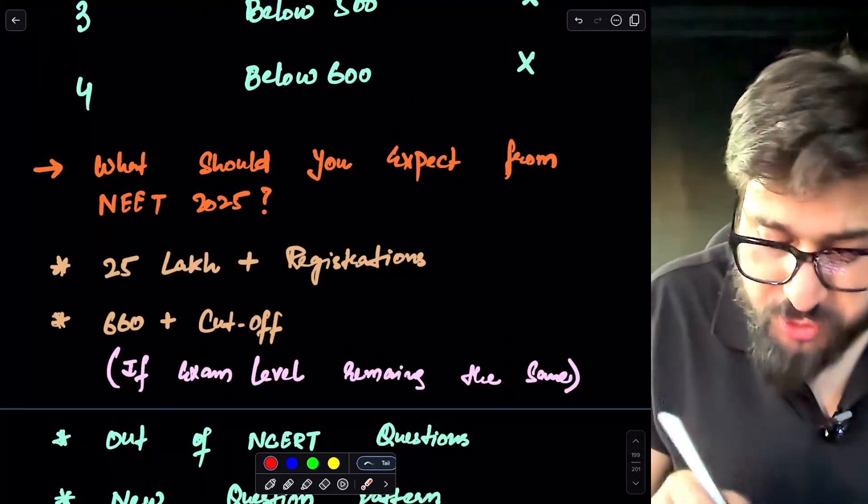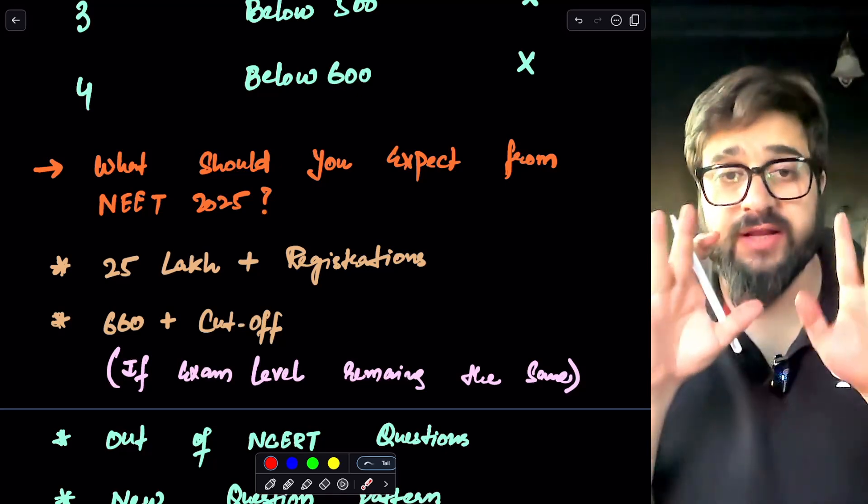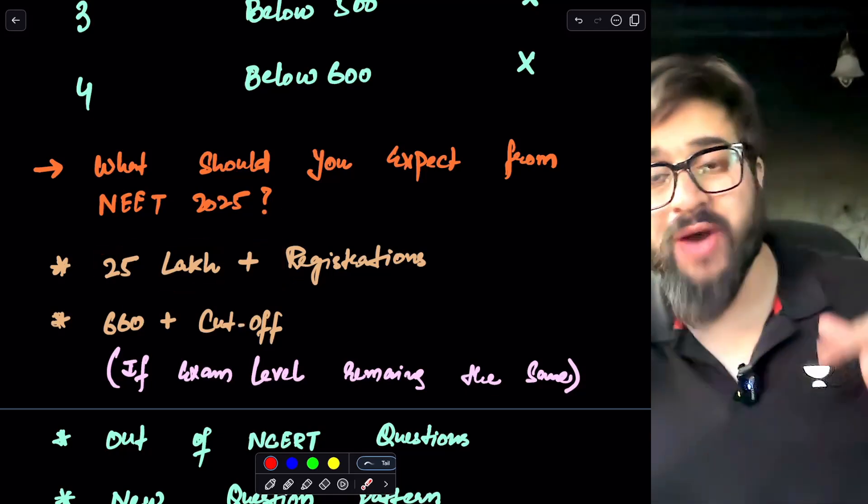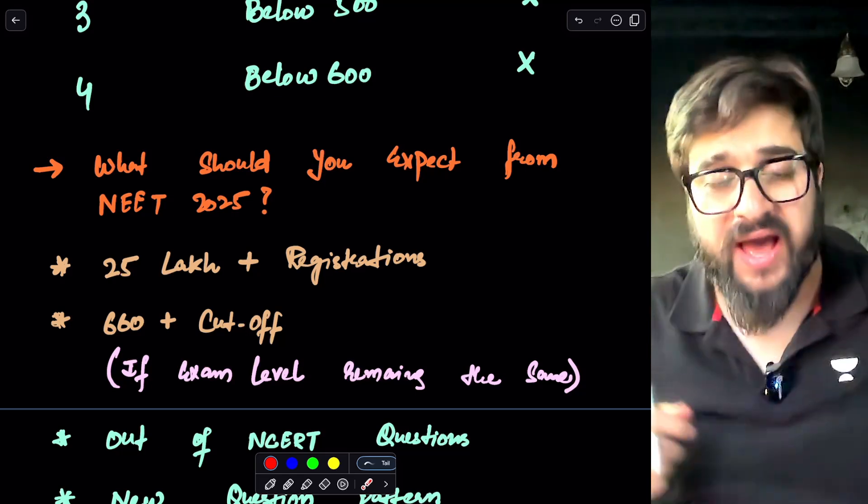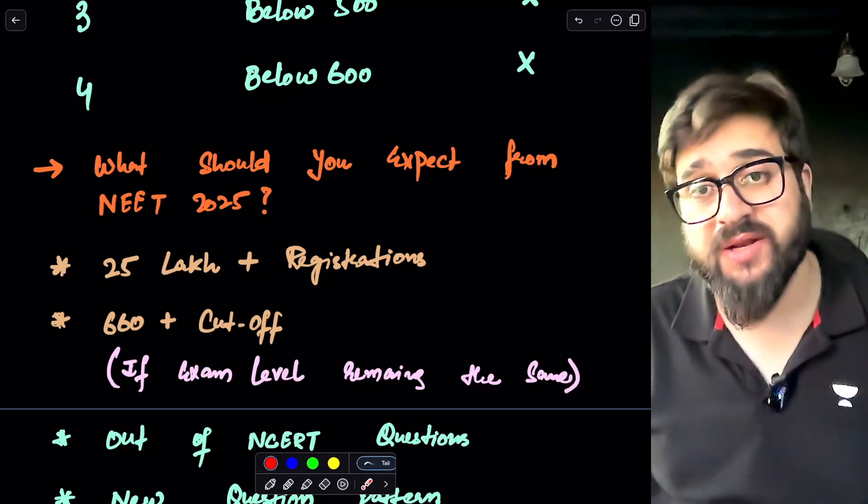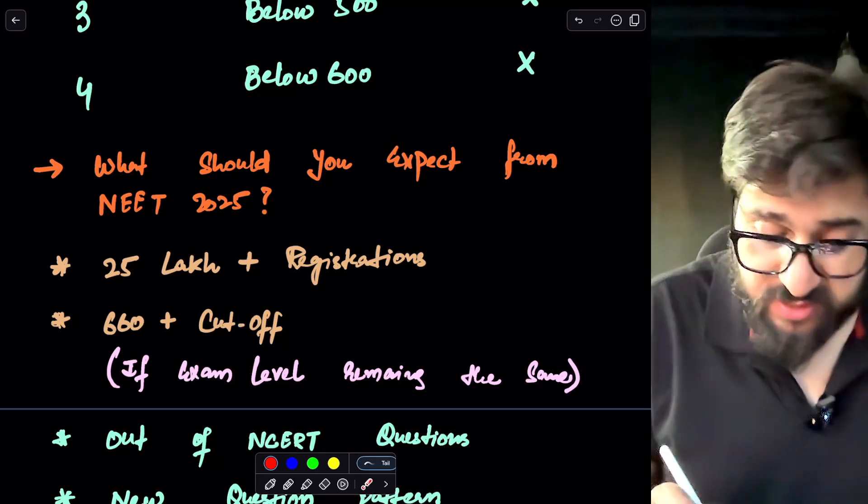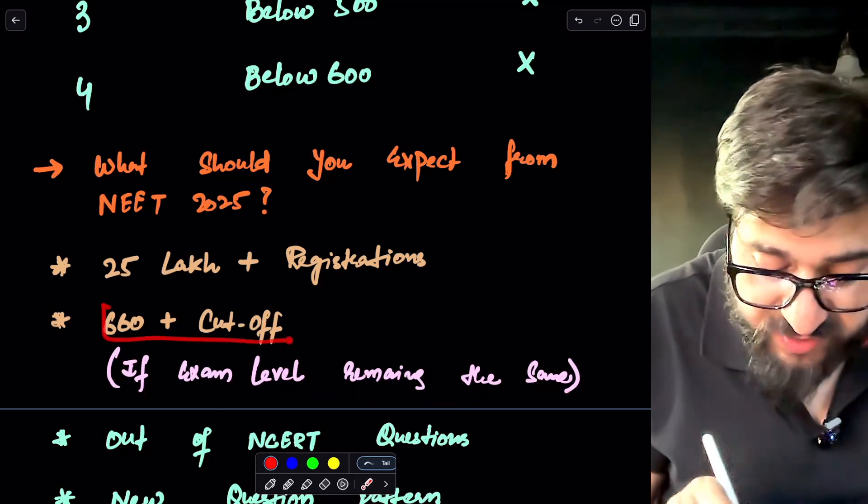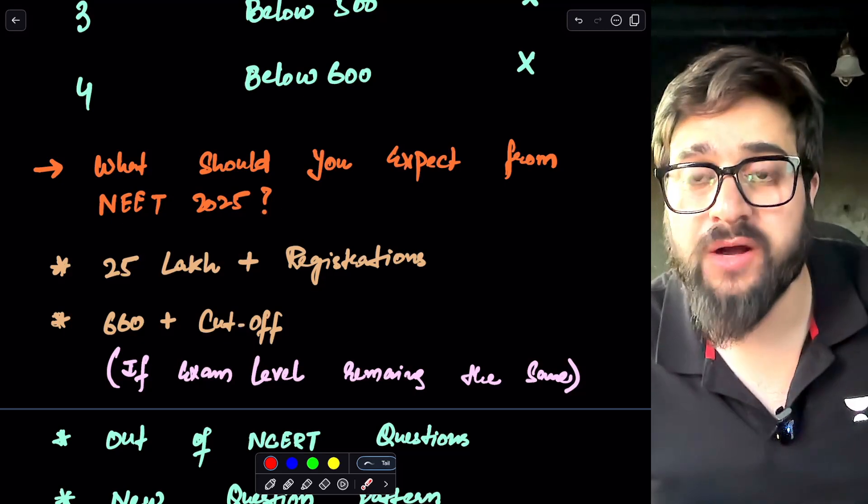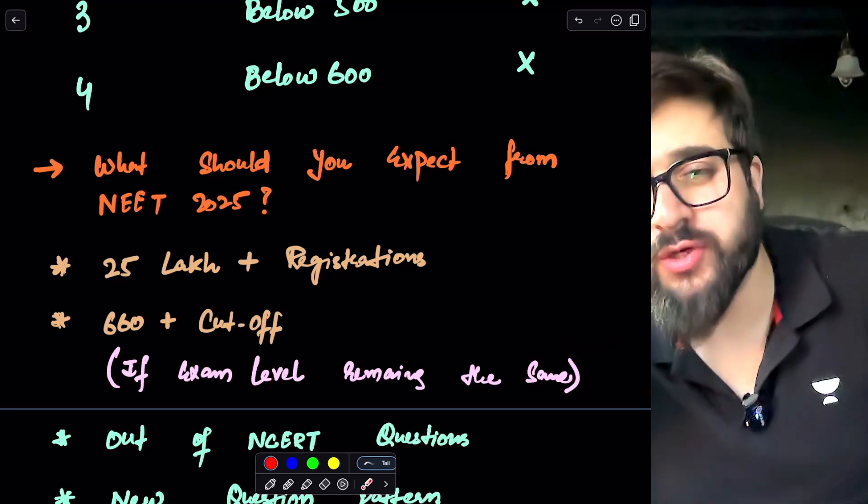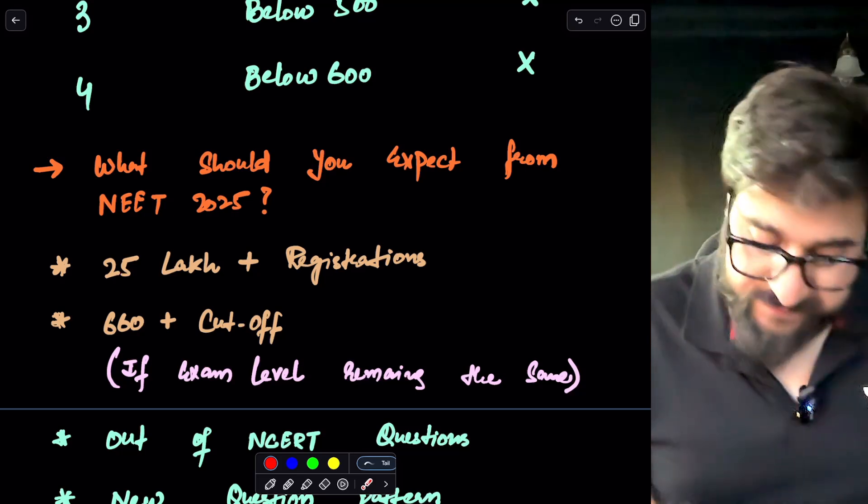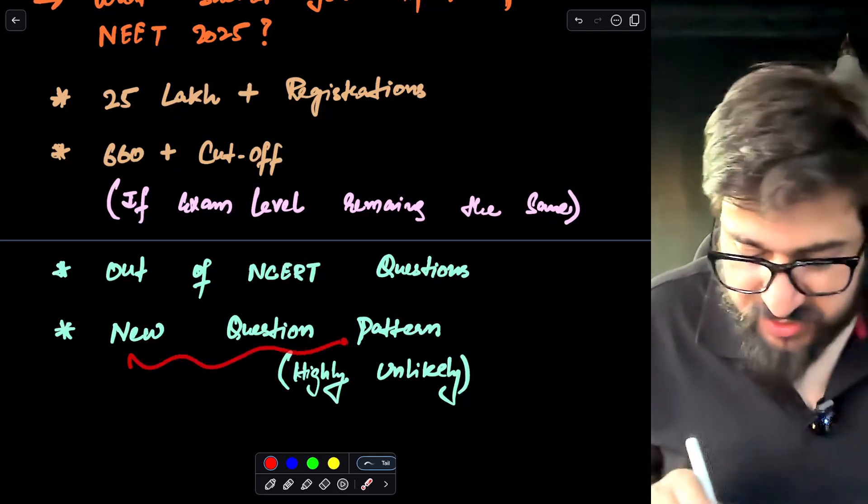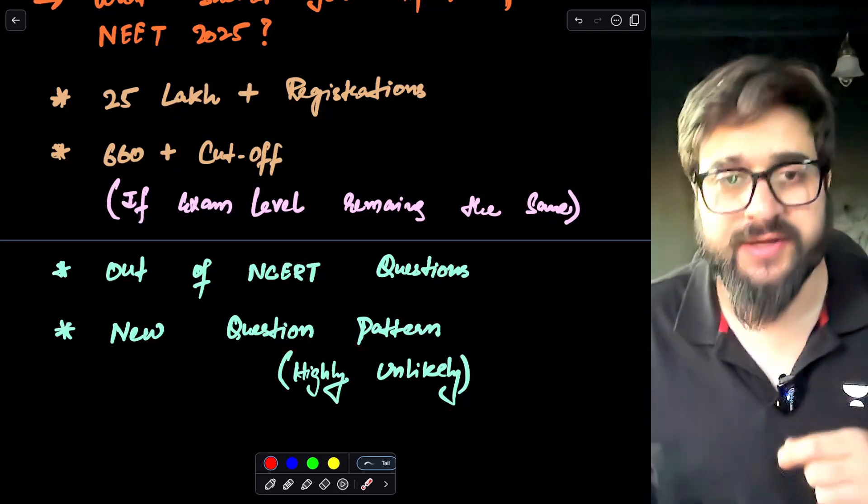Next, what should you expect from NEET 2025? As I told you in the start, I'll be telling you the details. See, 25 lakh plus registrations will be in the NEET 2025. That's for sure. Because already you have been seeing that the number of registrations kept increasing every single year, as in NEET 2024, how many registrations were there? 23 lakhs. And you can see we are expecting 25 lakh plus registrations. And if the paper level, exam level remains the same, we can expect 660 plus cutoff. That's for sure, if the paper level remains same. But I think the paper is going to come difficult in the next year, so cutoff is going to decrease. Then next, we have questions out of NCERT. No, no question will be out of NCERT. That's for sure. That's the guarantee. And new question pattern introduced - highly unlikely they may introduce any of the new question patterns.